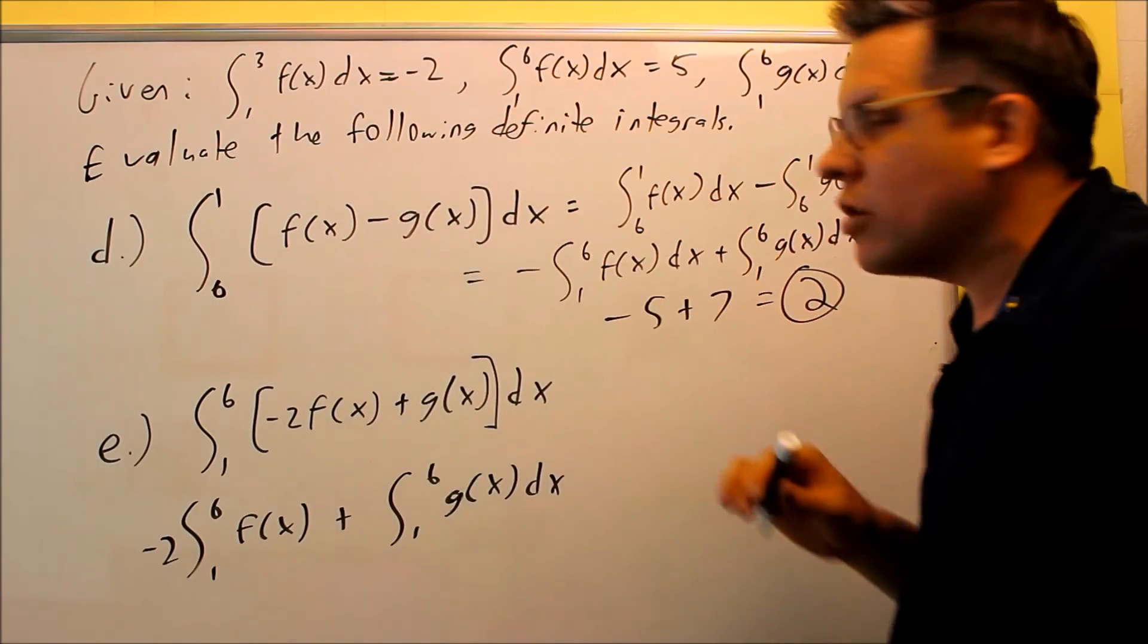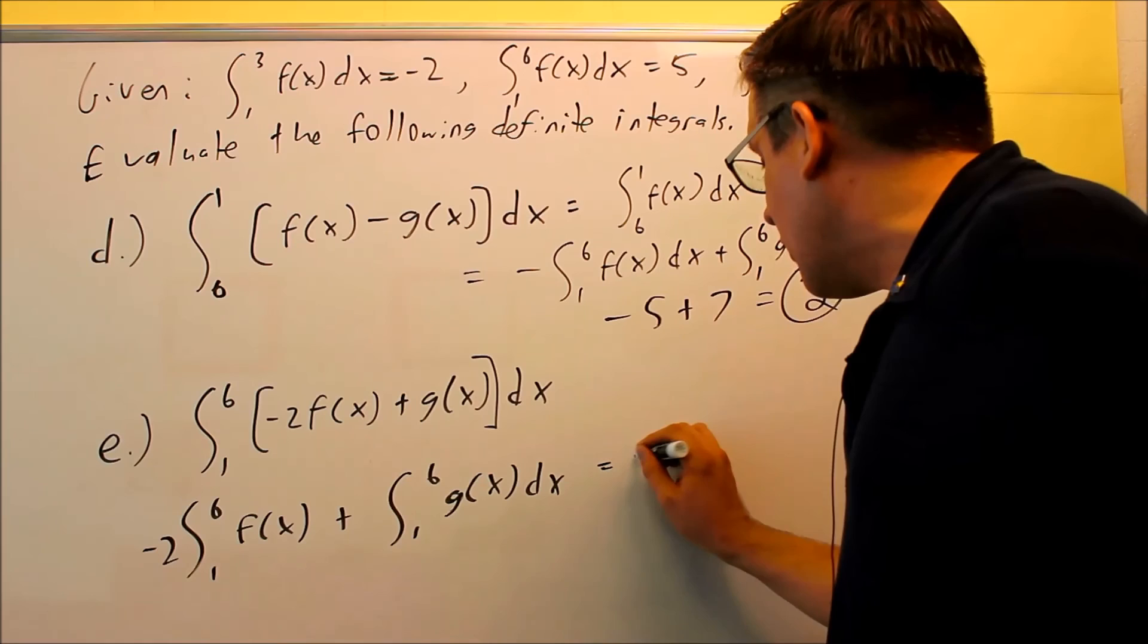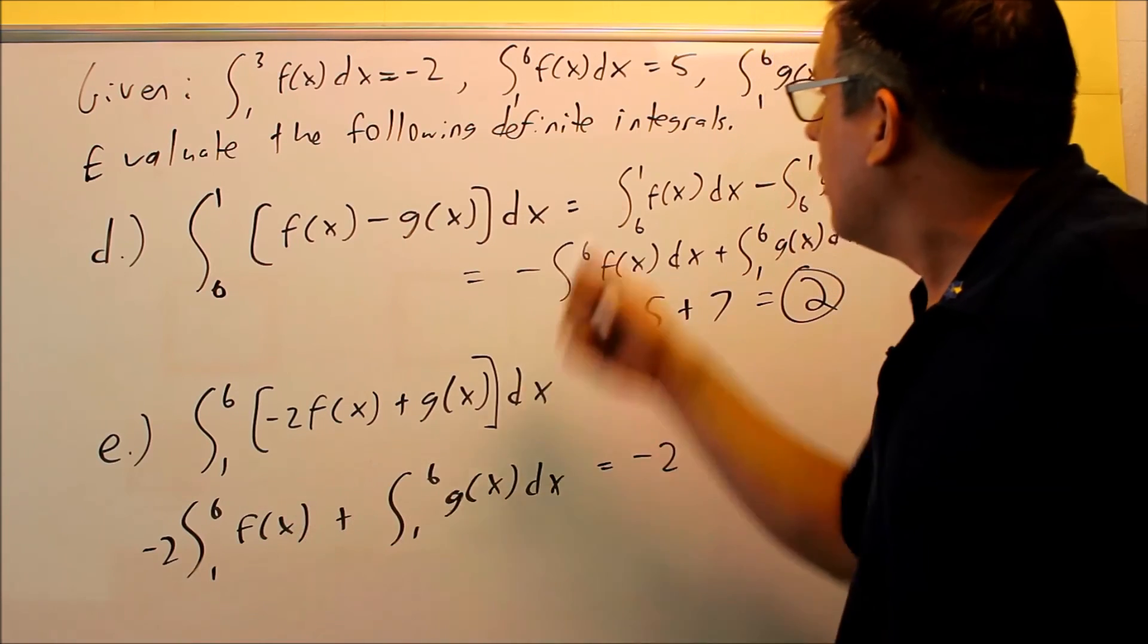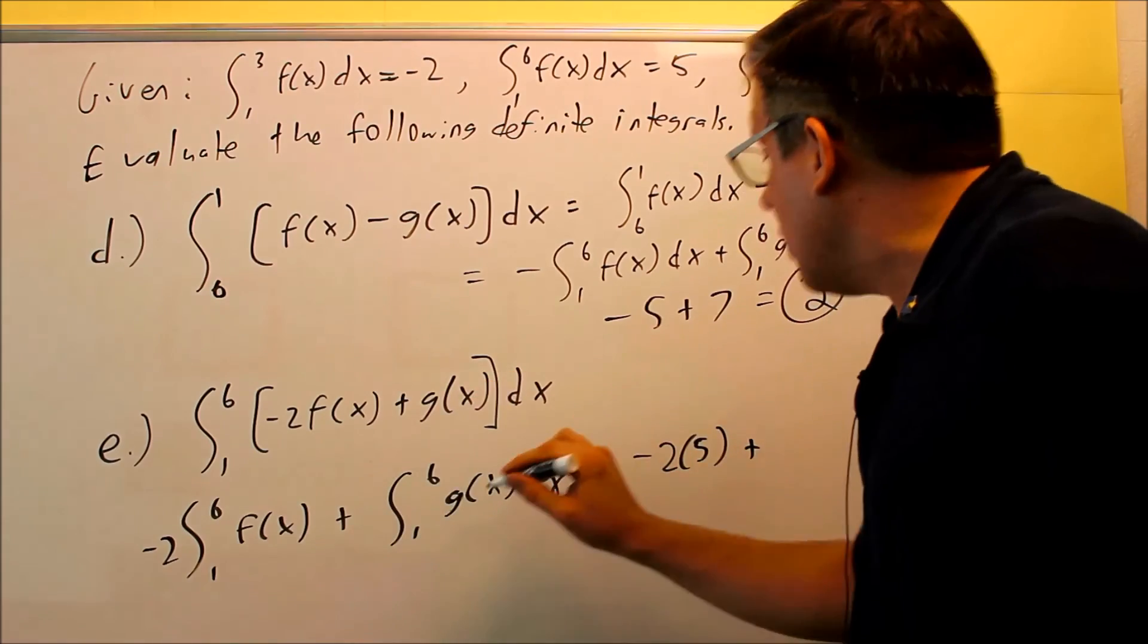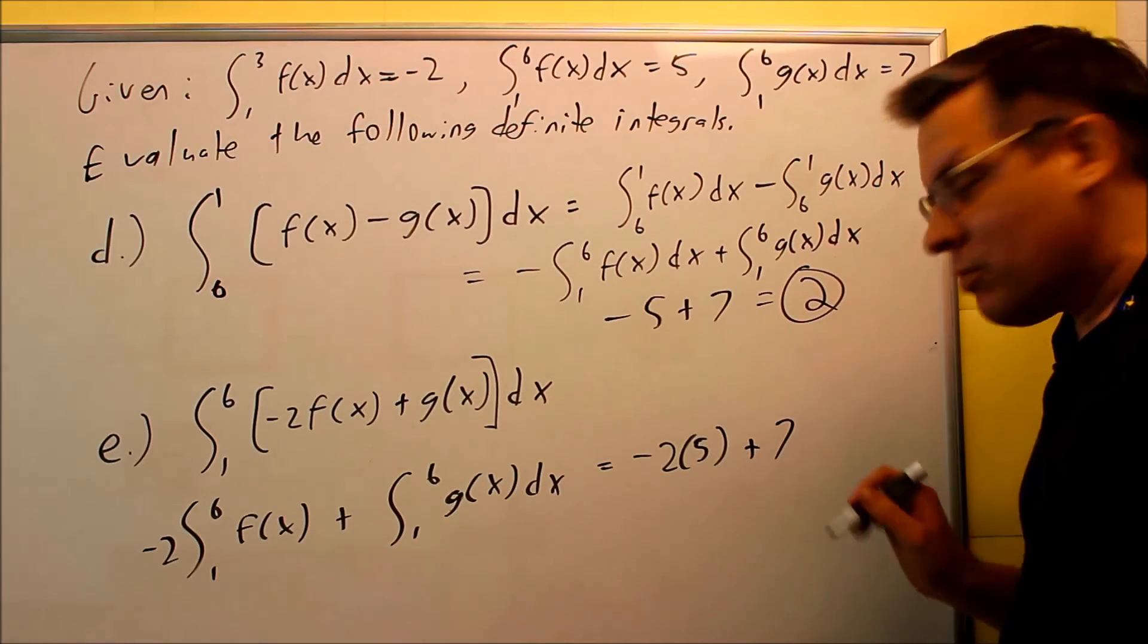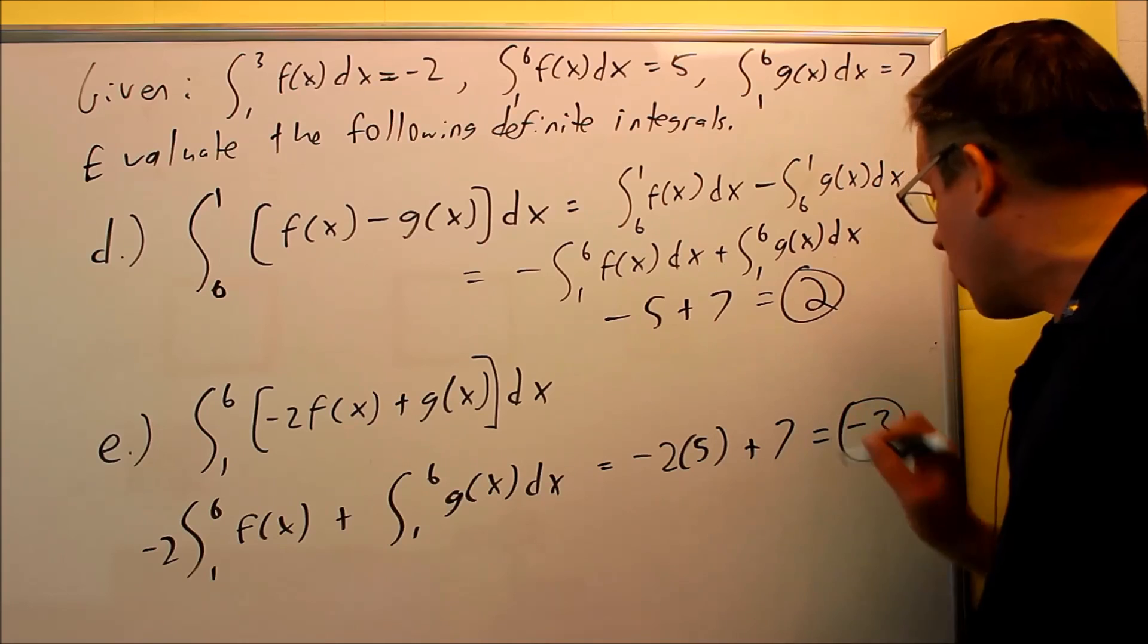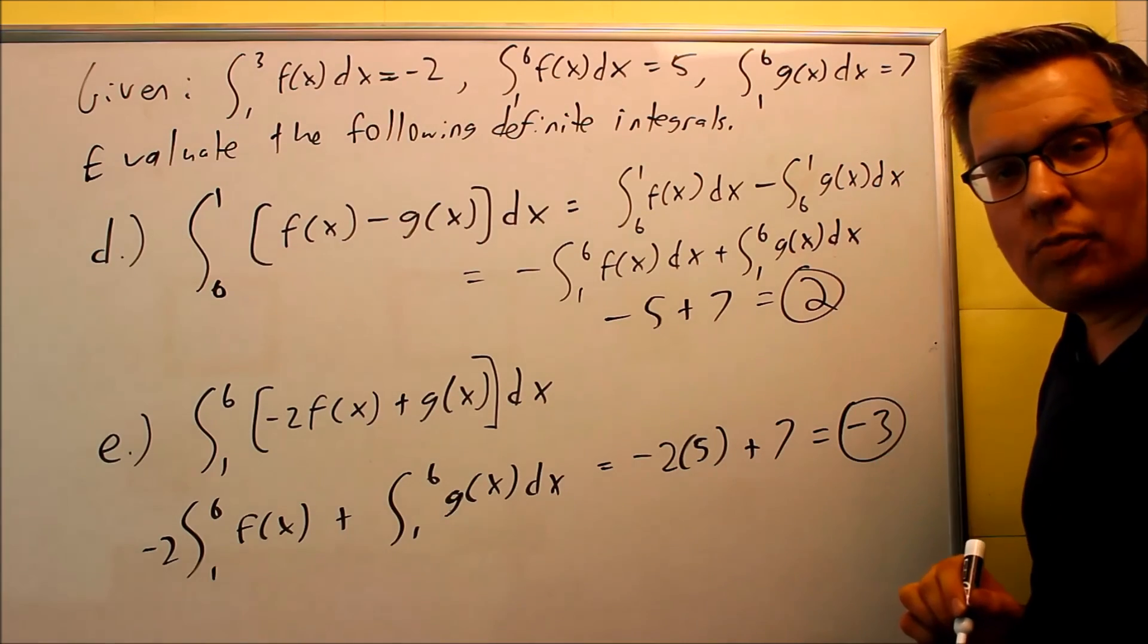So now I can just plug the numbers in directly from what I'm given there. So I have negative two times this one, which is going to be negative two times five, and I'm adding this one here, which is going to be seven. Negative ten plus seven will give us negative three, and that will be your final answer for part e.